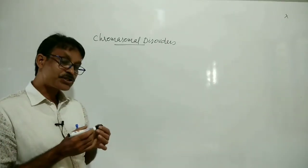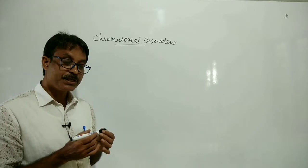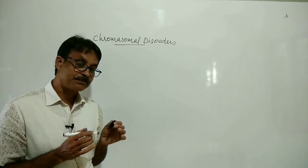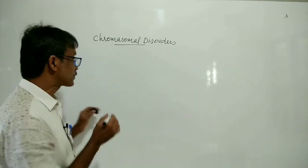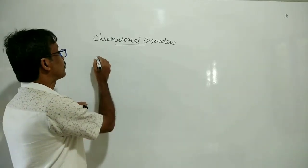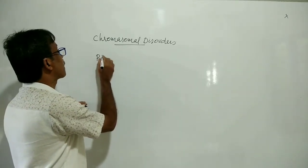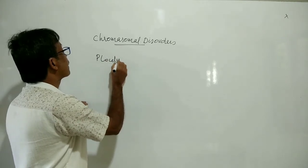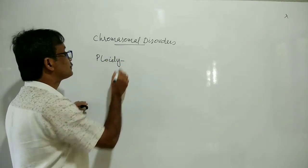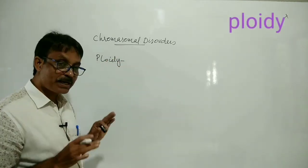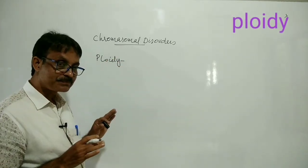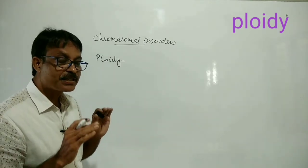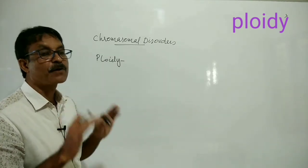A change in the number of chromosomes is called ploidy. So what is ploidy? A change in the number of chromosomes.